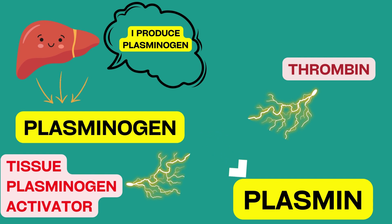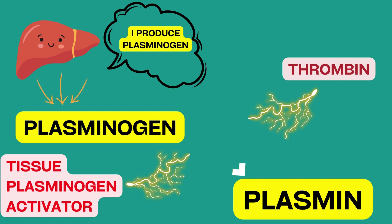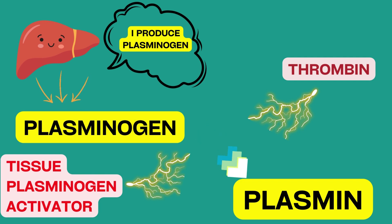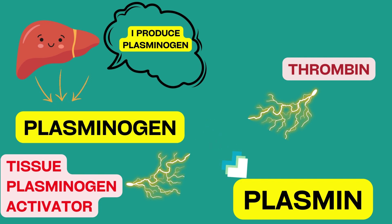When a clot is formed, plasminogen is also incorporated in it. The activated factor 2, that is thrombin, and the tissue plasminogen activator are also present. Thrombin formed during the process of clotting slowly begins to convert plasminogen into plasmin. The deposition of fibrin within the vessel wall gives rise to stimuli which trigger the release of plasminogen activator from the endothelial cells of the blood vessel. This physiologic knowledge of formation of FDP by plasmin is crucial to understand the pharmacology of fibrinolytic drugs.